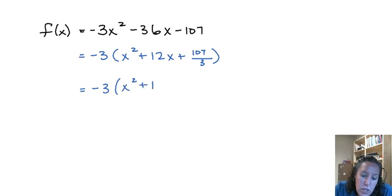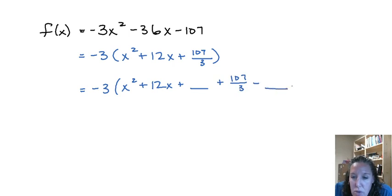So we're going to move that 107 over 3 out of our way. We're going to add in what we're going to complete our square with. And then since we added it we've also got to subtract it. It's all inside the parentheses there.